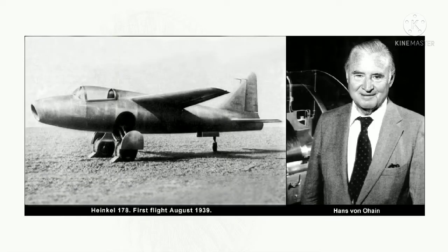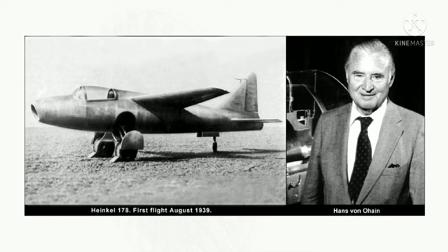Although the Italians were unaware of it, a year earlier than this the Germans had flown their version of a jet aircraft, the Heinkel 178. This aircraft was powered by an engine designed by a young German scientist called Hans von Ohain. Despite the relatively sparkling performance for that era — it could travel at speeds in excess of 400 miles per hour — the German Air Force initially paid it scant regard, and it was never produced in any quantity.